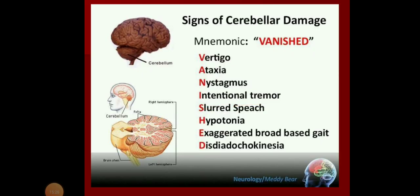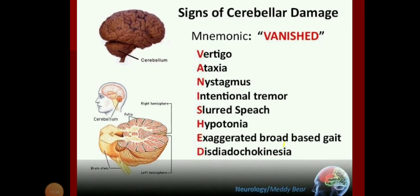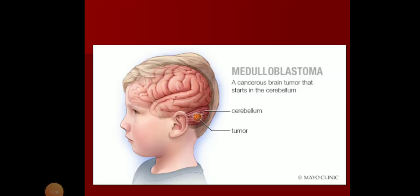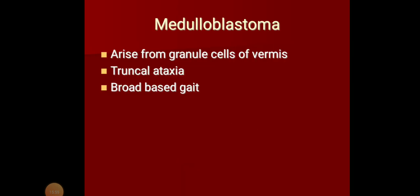The signs of cerebellar damage include: vertigo, ataxia, nystagmus, intentional tremor, slurred speech, hypotonia, exaggerated broad-based gait, and dysdiadochokinesia. Medulloblastoma is a cancerous brain tumor that arises in the cerebellum, commonly from the granule cells of the vermis. The patient presents with truncal ataxia and broad-based gait.